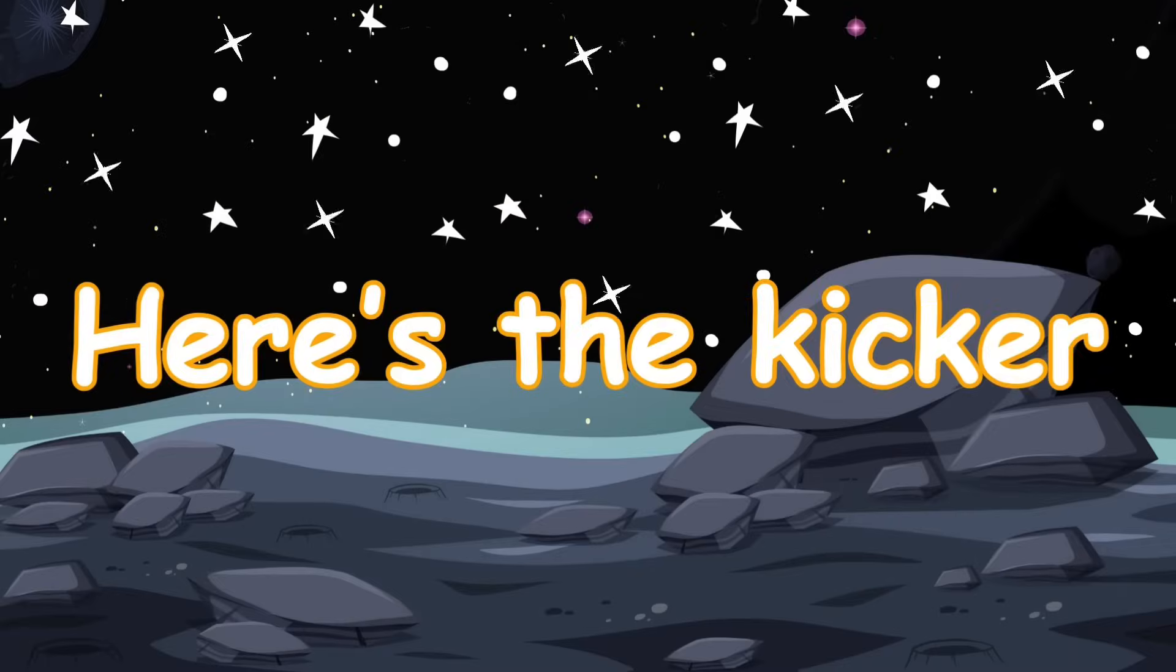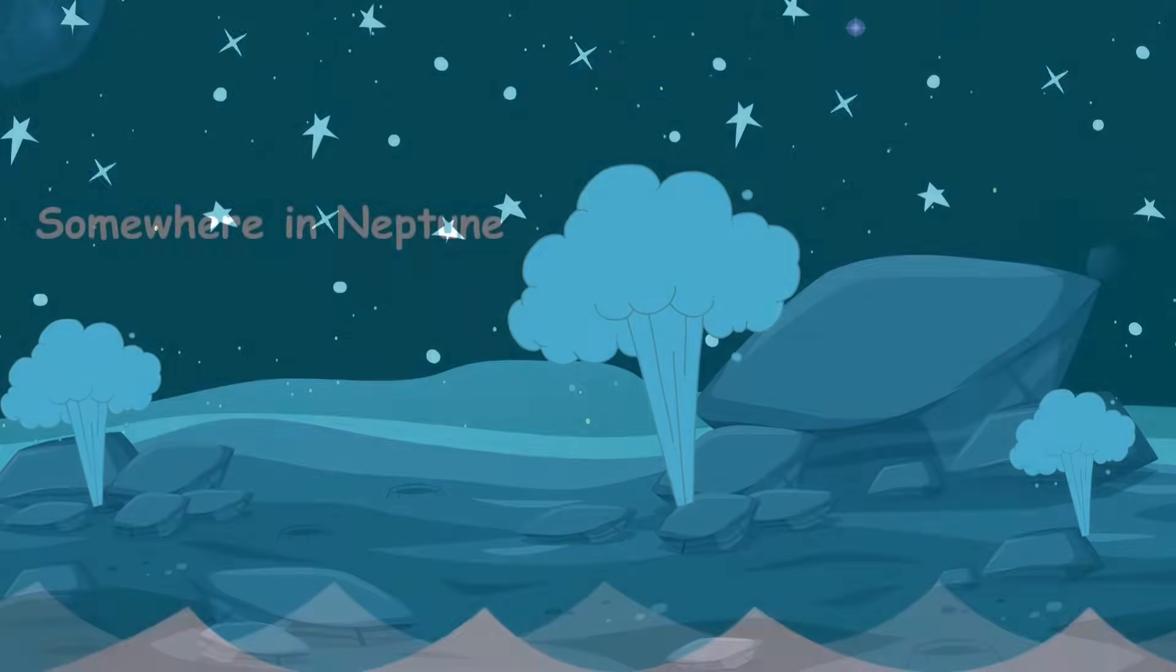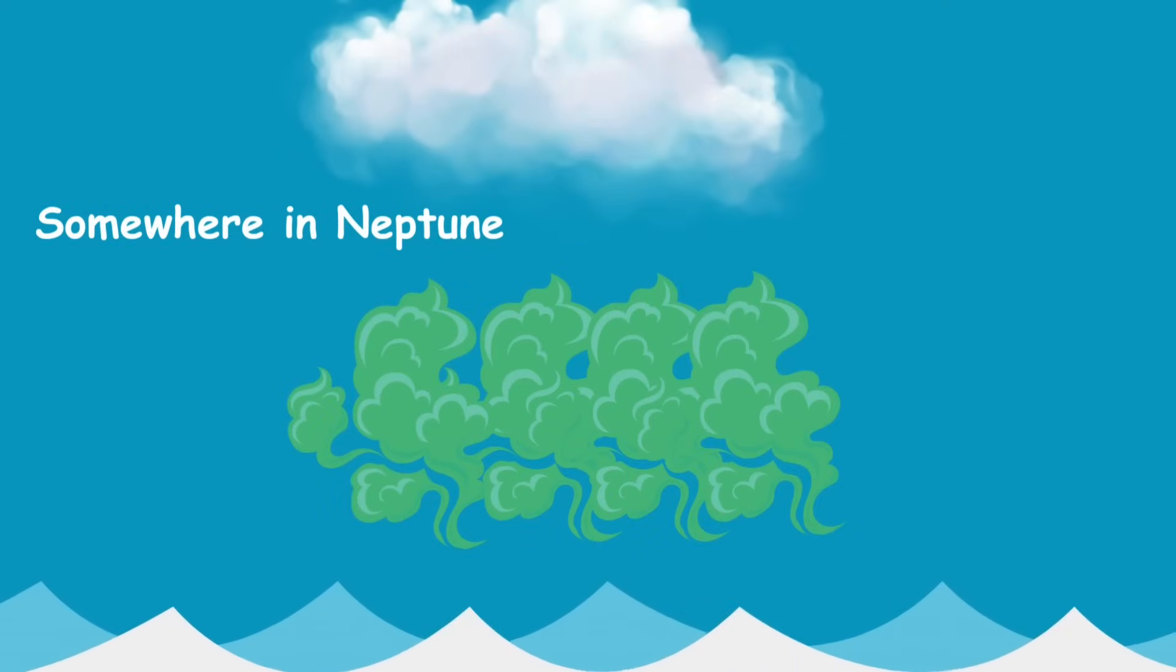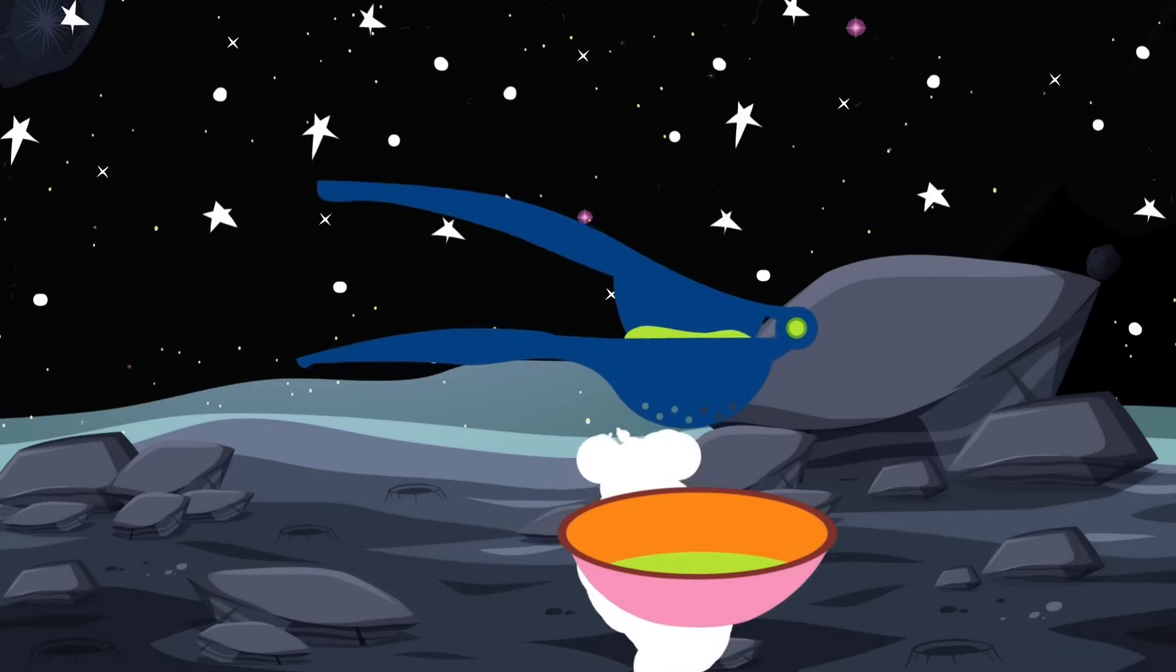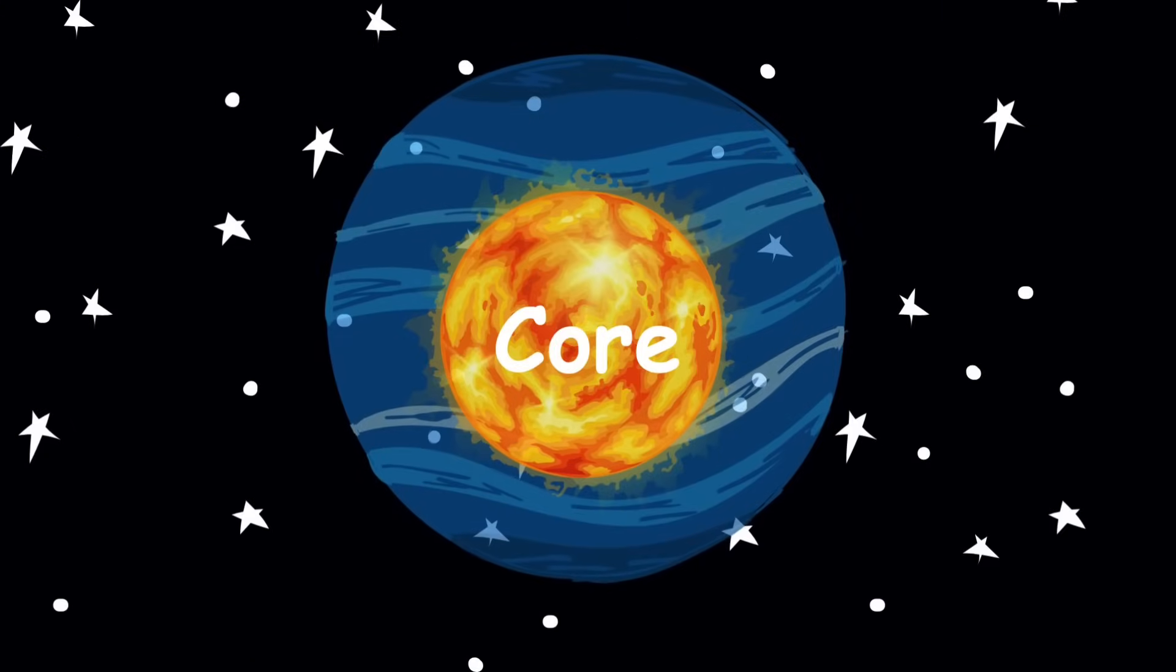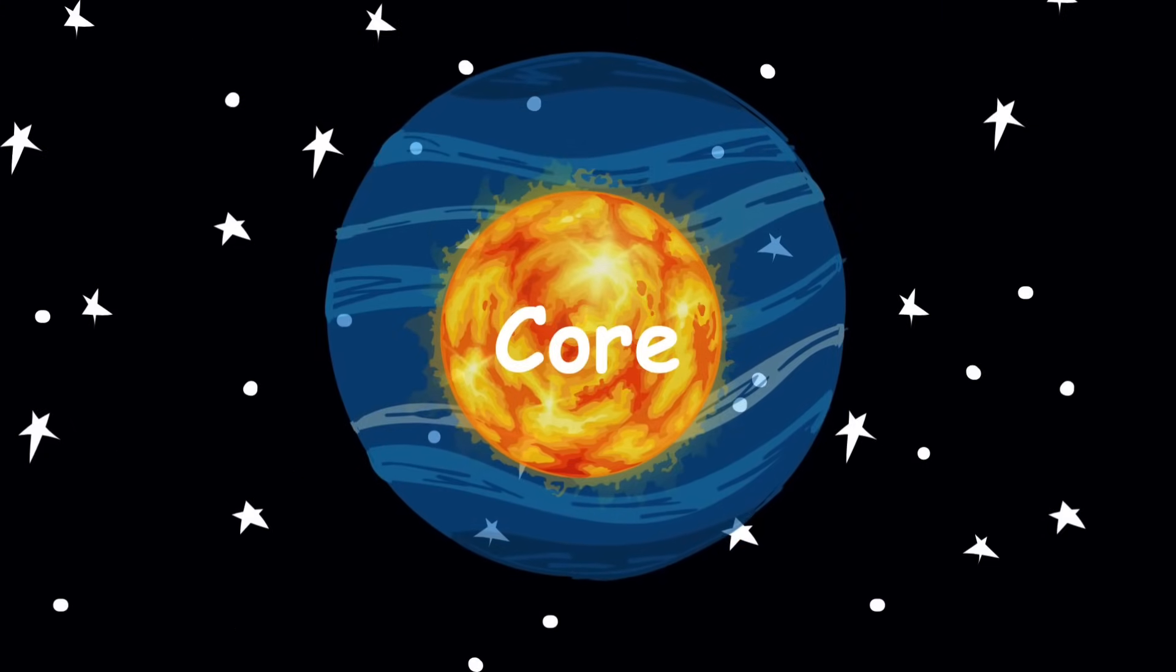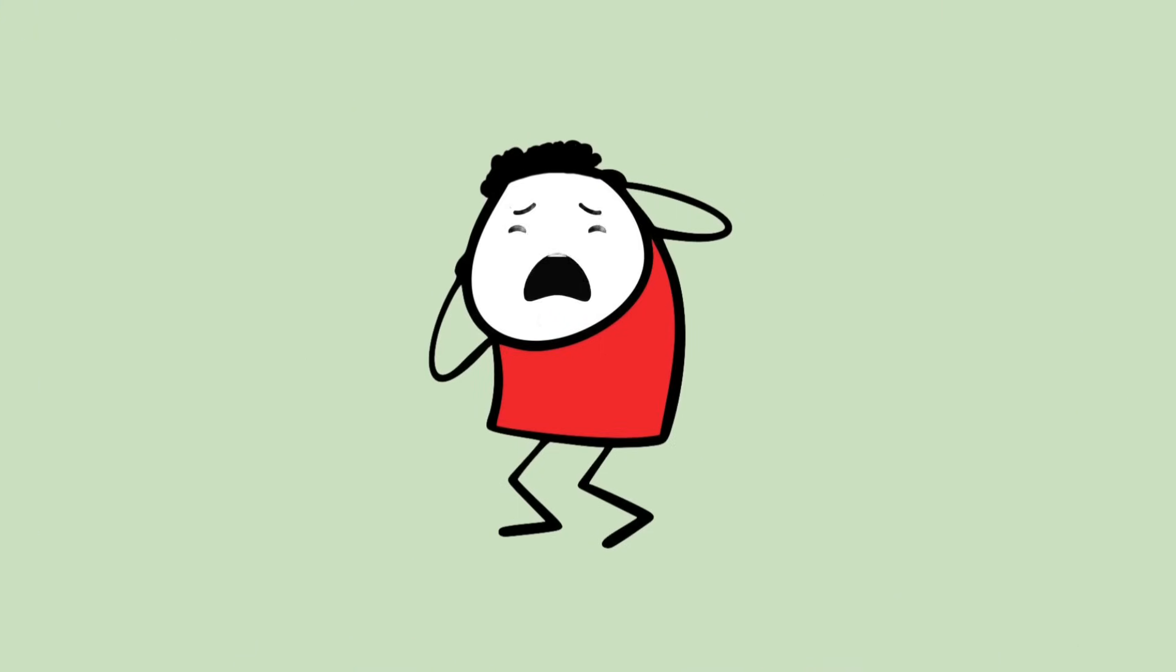Here's the kicker. You can't even stand on Neptune. It doesn't have a solid surface. You just fall forever through clouds, gas, maybe a liquid ocean of weird chemicals, and then get squished like a soda can by crushing pressure. Even the core, which might be solid, is under millions of atmospheres of pressure. You wouldn't reach it unless you were made of adamantium. And even then, you'd probably cry.